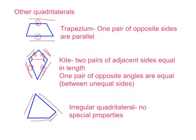So, quadrilaterals are any closed shape with four straight sides. We have parallelograms, which are the majority of the quadrilaterals we looked at today — parallelograms are quadrilaterals with both pairs of opposite sides being parallel. We've also looked at three other quadrilaterals: a trapezium, a kite, and an irregular quadrilateral.